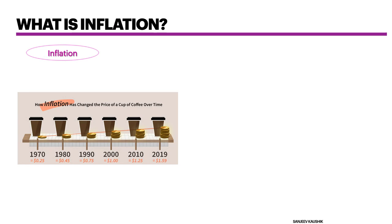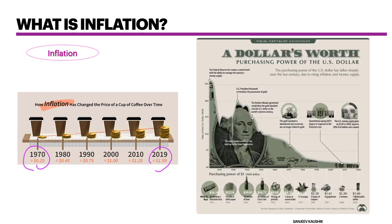Inflation is nothing but the decline of purchasing power of any given currency over a period of time. One cup of coffee in 1970 you could buy for 25 cents — nowadays you have to pay $1.60. Let's see how inflation has changed in the US over a very long period of time.